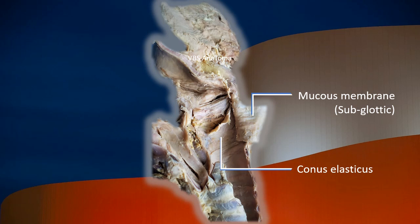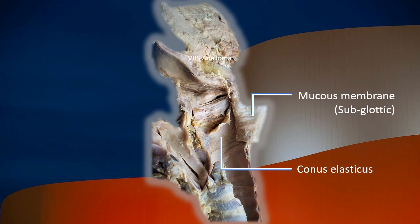On the other side, the mucous membrane has been removed as a flap and thrown to the side; the conus elasticus is visible. In this specimen, the conus elasticus is also being displaced, and the yellow-black flashing arrow is showing a muscle exactly below the vocal fold — that muscle is the vocalis muscle.